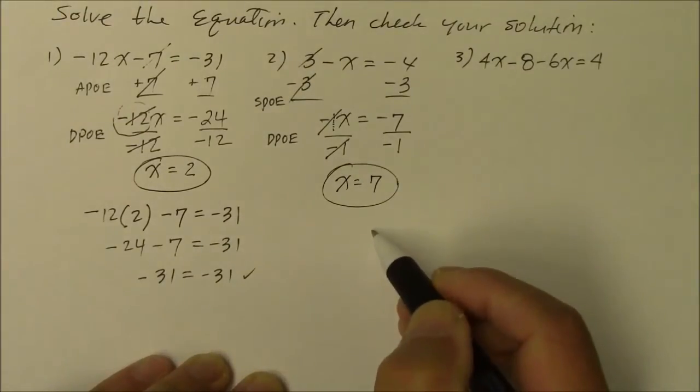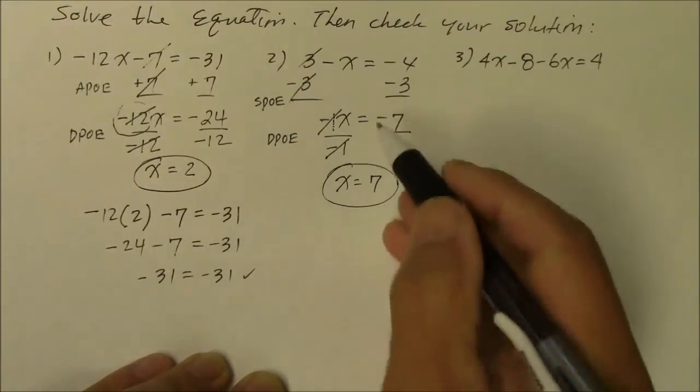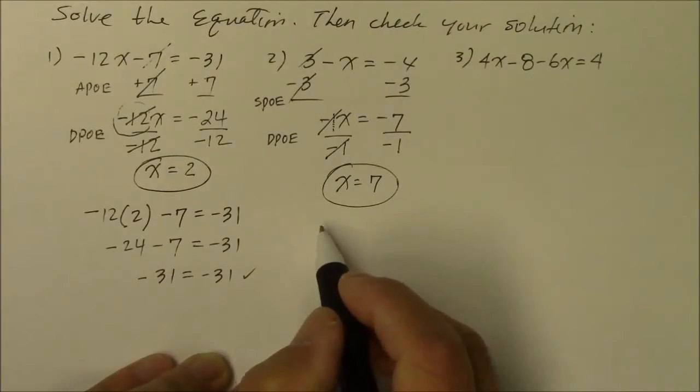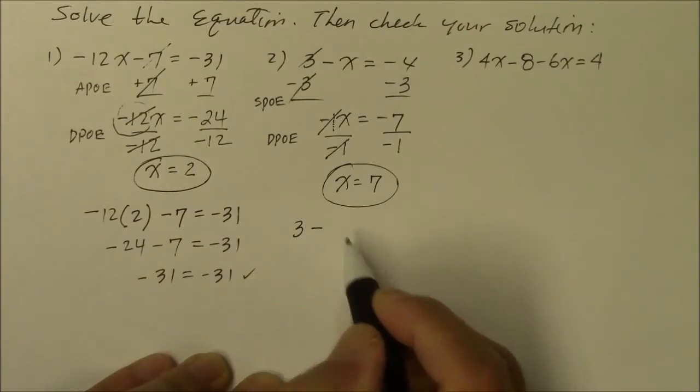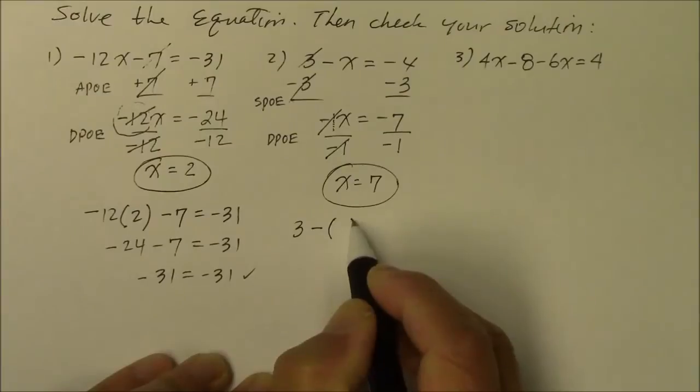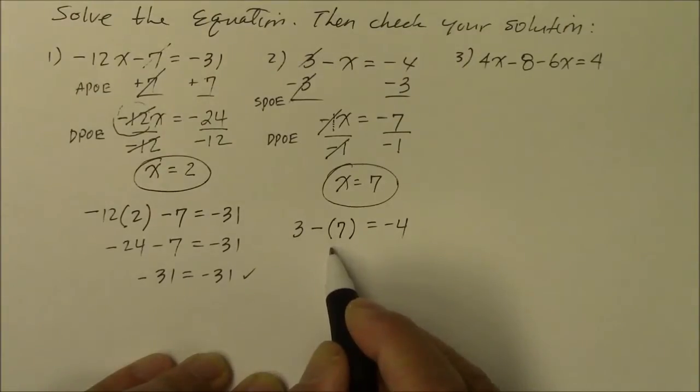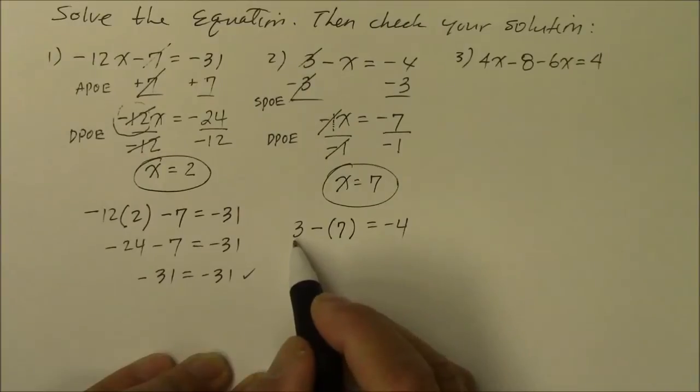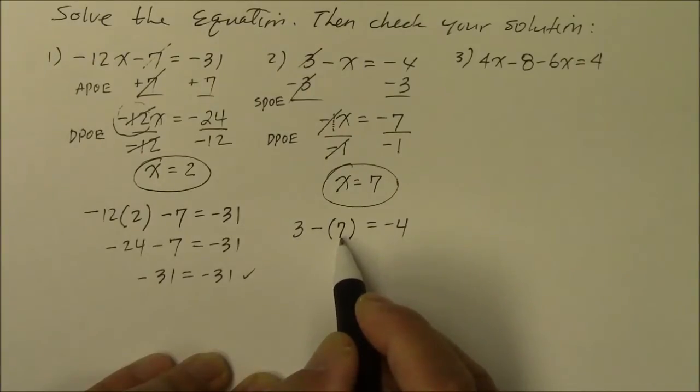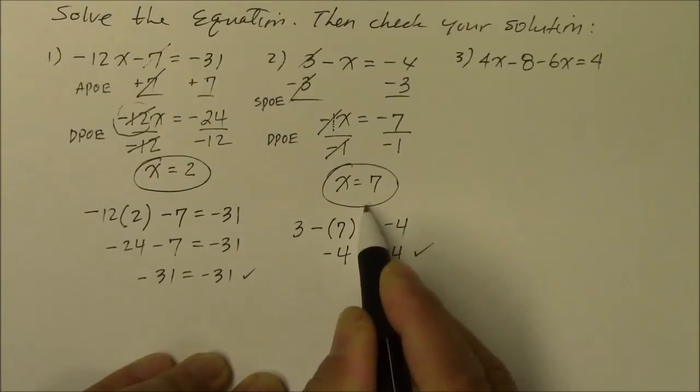Did you check it? Here I do it. 3 minus, look at the way I do this, the x is 7 is equal to negative 4. $3 in a bank, take out 7, you're going to owe the bank money, you're going to owe the bank 4 bucks, negative 4. And since the left and the right equals, that's a good answer.